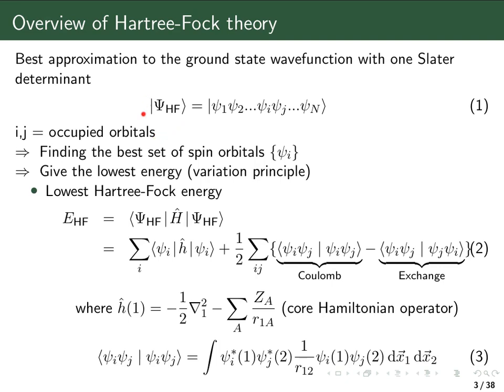So if you want to optimize this Hartree-Fock determinant in order to give the lowest energy with the variational principle, what we can optimize are the spin orbitals. The Hartree-Fock Theory gives us spin orbitals which will give the lowest possible Hartree-Fock energy. Therefore, we have to look at the expression for the Hartree-Fock energy.